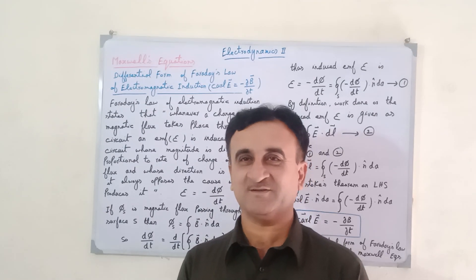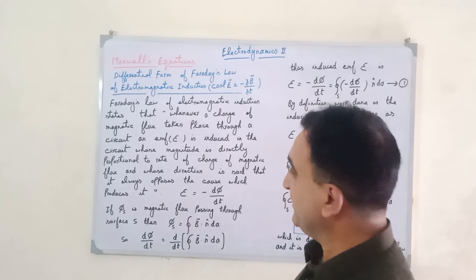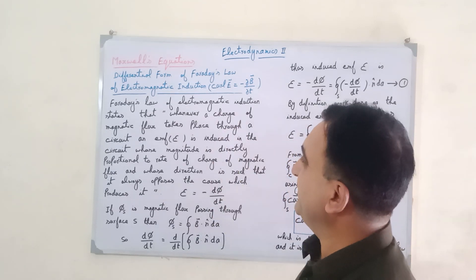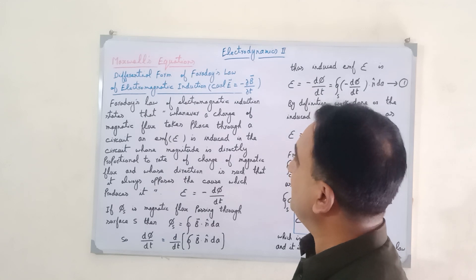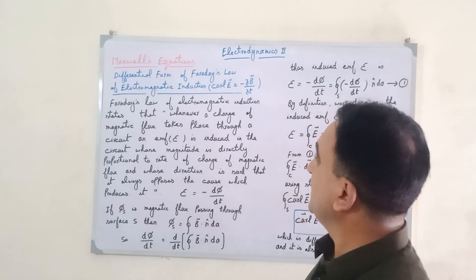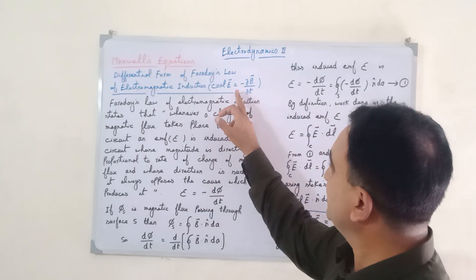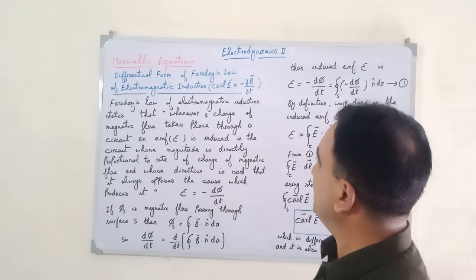Today the topic under discussion is the differential form of electromagnetic induction, Faraday's law of electromagnetic induction. We will prove that curl E is equal to minus partial B by partial t.